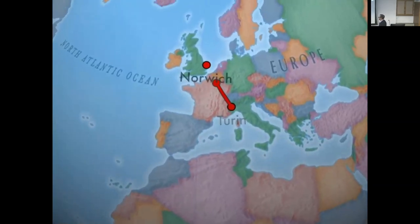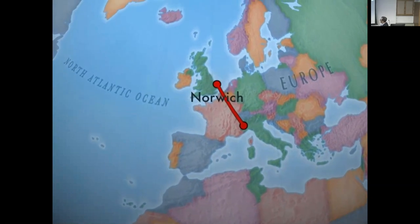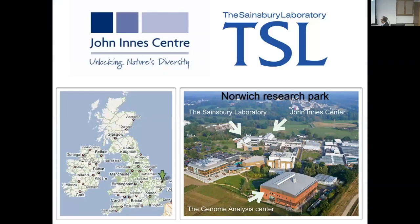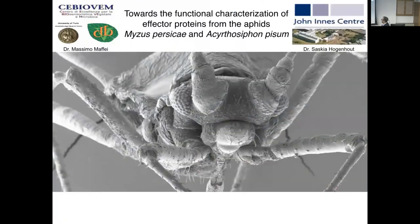After my study in Turin I went to Norwich, where they have a really nice research park — for example, a genomic analysis center, the Sainsbury Laboratory, and the John Innes Centre. I was able to establish a collaboration between the University of Turin and the John Innes Centre, where we were trying to functionally characterize effector proteins from Myzus persicae and Acyrthosiphon pisum. Here is an EM picture from Acyrthosiphon, showing its peculiar mouthpart.